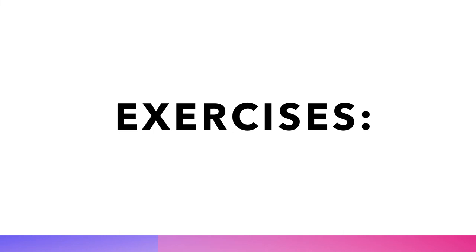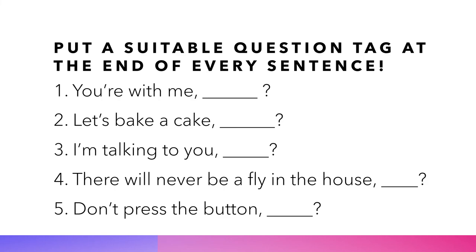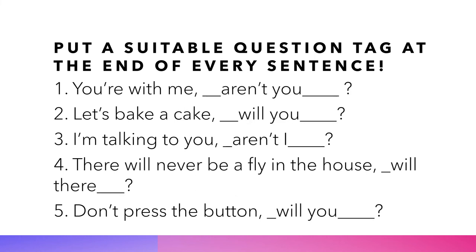Let's continue with the exercises. Put a suitable question tag at the end of every sentence: 1. You're with me. 2. Let's bake a cake. 3. I'm talking to you. 4. There will never be a fly in the house. 5. Don't press the button. Now let's check the answers: 1. You're with me, aren't you? 2. Let's bake a cake, shall we? 3. I'm talking to you, aren't I? 4. There will never be a fly in the house, will there? 5. Don't press the button, will you?